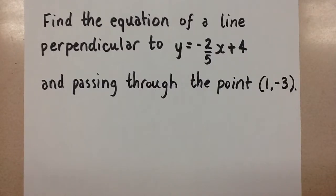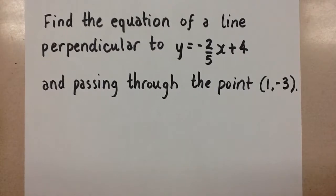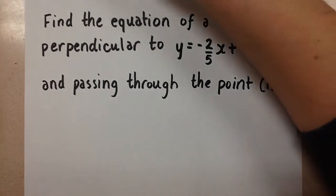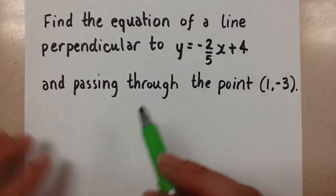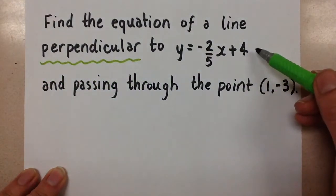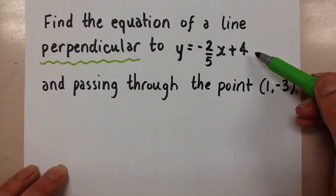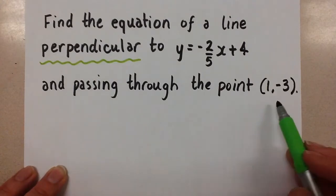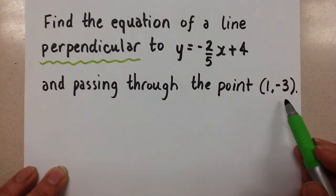Hi guys, Mrs. A here. Today we're going to look at how to find the equation of a line when we're given its slope and another point that the line passes through. So let's look at this question. Find the equation of a line perpendicular to the line y equals negative 2 over 5x plus 4, and passing through the point 1 and negative 3.